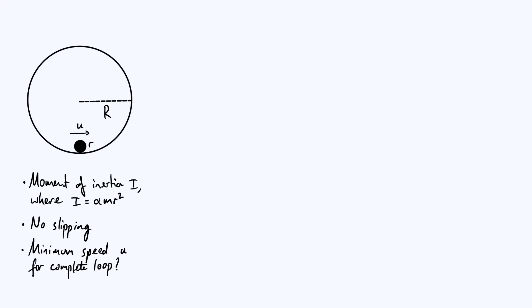I've written in my notes on screen that the moment of inertia of the rigid body is I — that is the moment of inertia about an axis which passes through the center of the object and goes directly into the screen. I've written I as α·mr², where r is the radius of the object. Alpha is a dimensionless parameter which can be between 0 and 1, and its value depends on how the mass is distributed within the object. For example, a uniform solid sphere gives α = 2/5, a uniform solid cylinder gives α = 1/2, and a cylindrical shell gives α = 1.